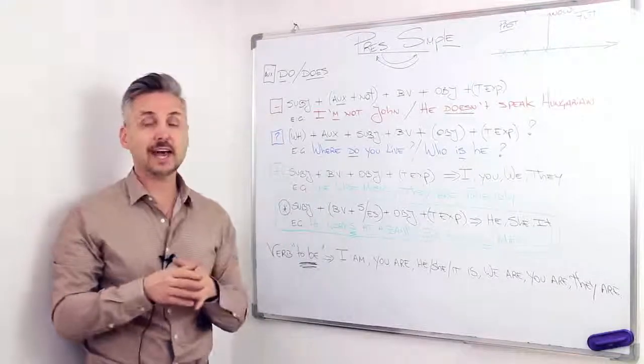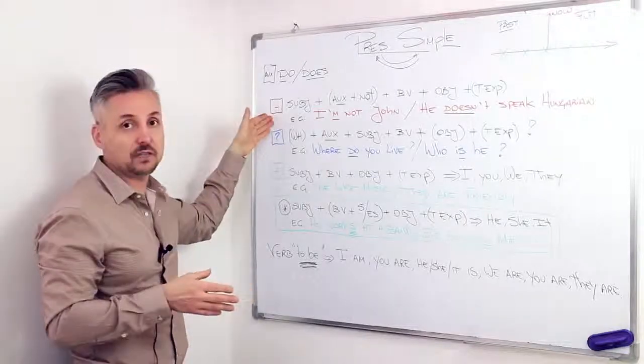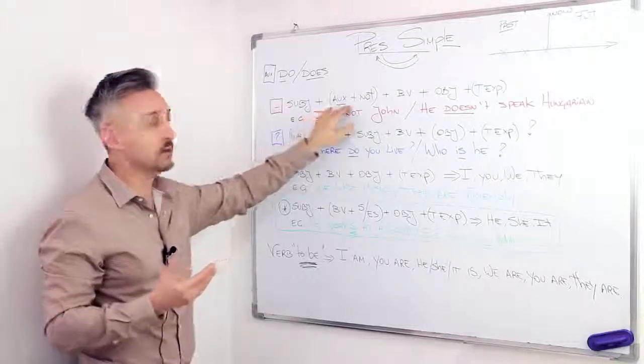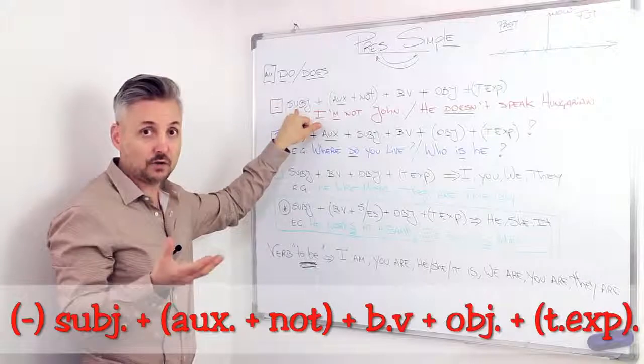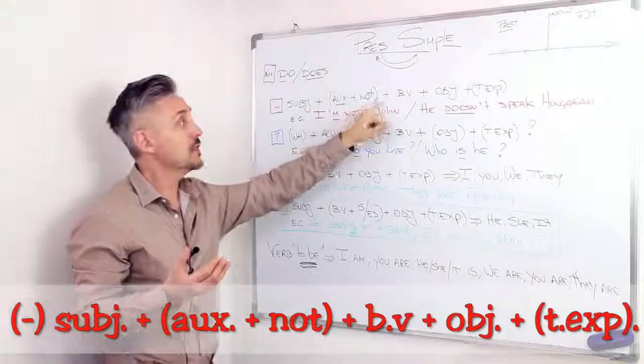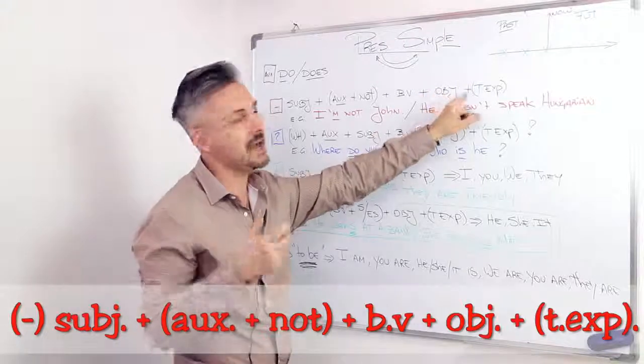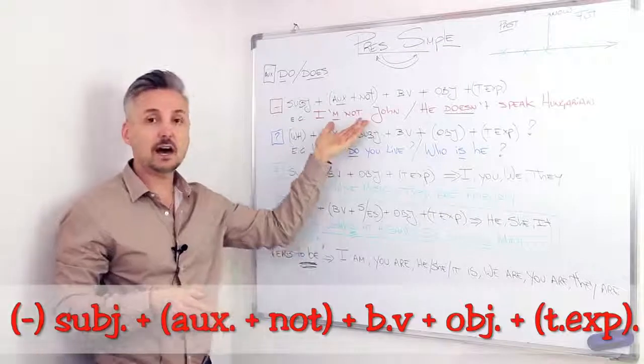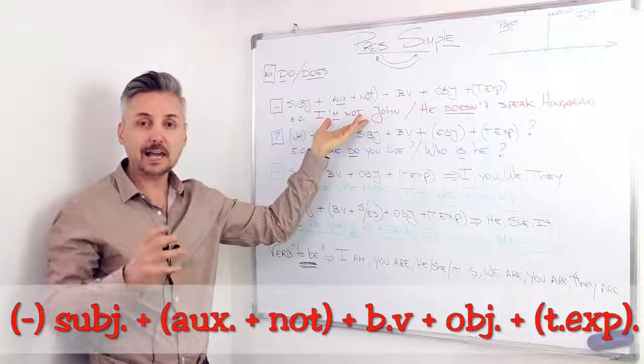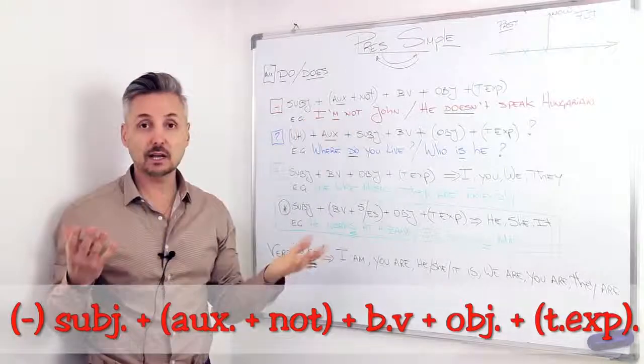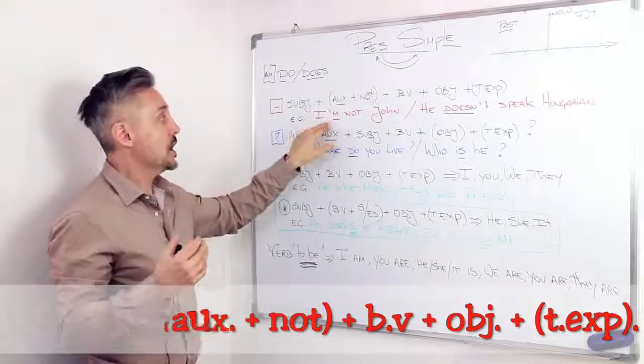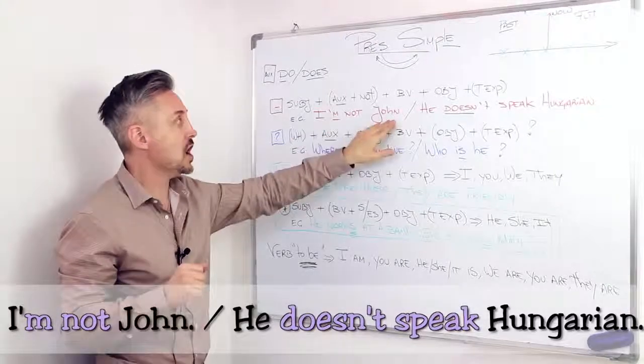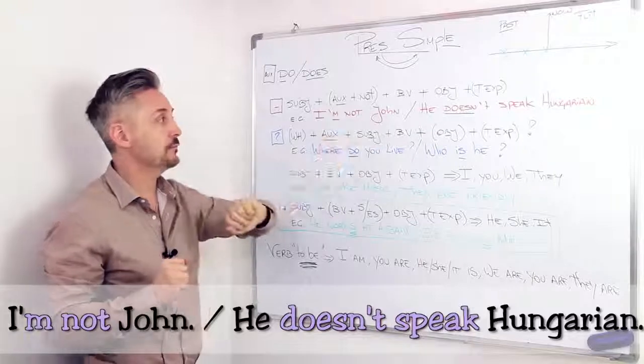So if you look at the first example, or the first type of sentence, is a negative. And in the negative, we need the auxiliary. So we have the subject first, then the auxiliary plus not, then the base of the verb, then the object, and maybe the time expression. I chose to start with the verb to be, and you know that the verb to be acts by itself. So it doesn't need an auxiliary. So the example is, I'm not John. I'm Mark. You know that. So I'm not John. I am not John.